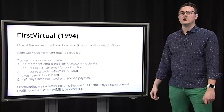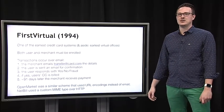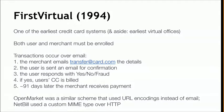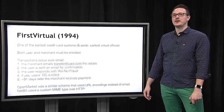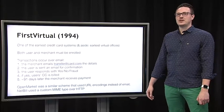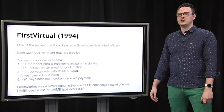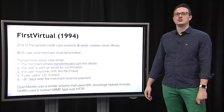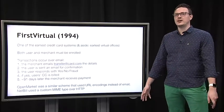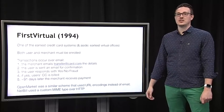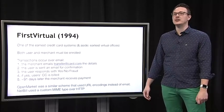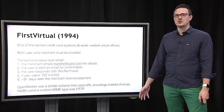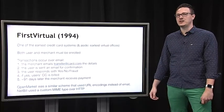The user is then sent an email with the transaction details asking them to approve it. If the user emails back yes, First Virtual will bill the credit card the user had provided when enrolling. First Virtual then waits to see if the user disputes the charge — typically 90 days — and it's only on the 91st day that the merchant actually gets paid. This is a major drawback of the system.